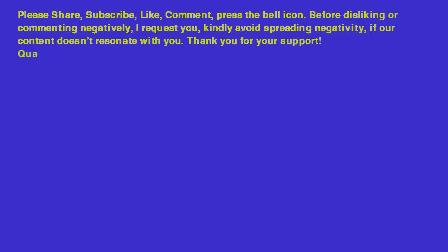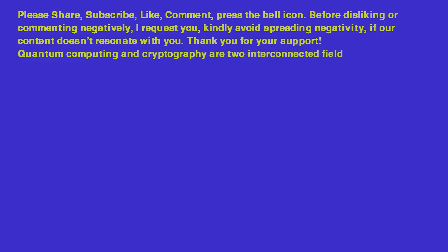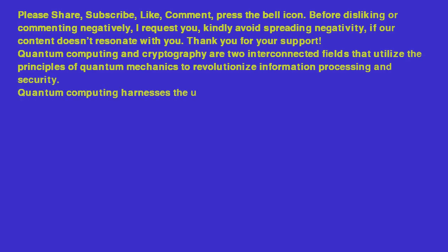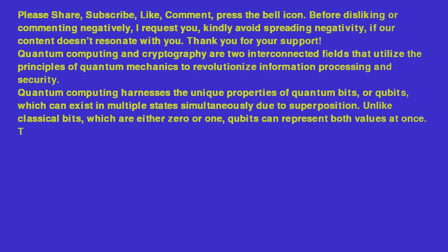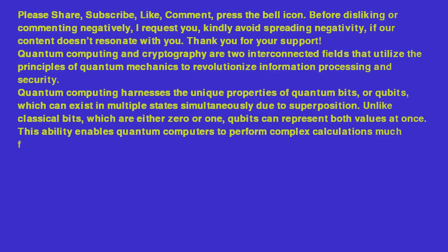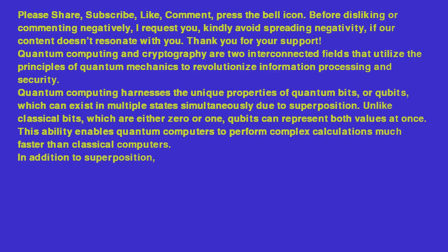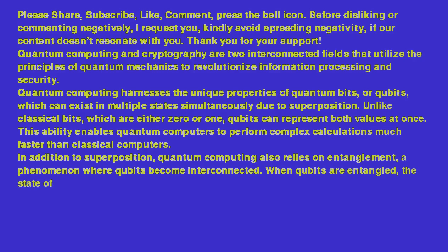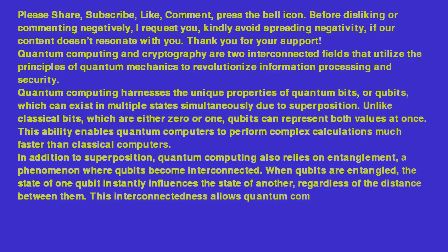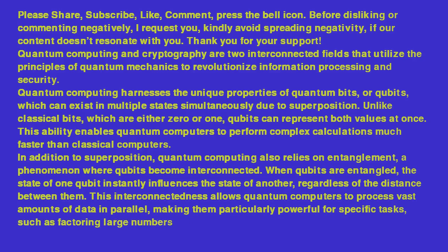Quantum computing and cryptography are two interconnected fields that utilize the principles of quantum mechanics to revolutionize information processing and security. Quantum computing harnesses the unique properties of qubits, which can exist in multiple states simultaneously due to superposition. Unlike classical bits, which are either 0 or 1, qubits can represent both values at once, enabling quantum computers to perform complex calculations much faster. Quantum computing also relies on entanglement, where qubits become interconnected — the state of one qubit instantly influences the state of another, regardless of distance. This allows quantum computers to process vast amounts of data in parallel, making them particularly powerful for factoring large numbers, optimizing complex systems, and simulating molecular interactions.